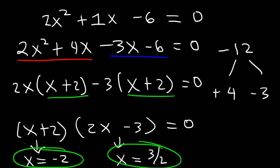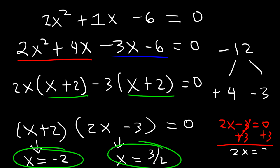So those are the two answers. For those who want to see the step: add 3 to both sides of 2x minus 3 equals zero to get 2x equals 3, then divide by 2, so x is equal to 3 over 2.